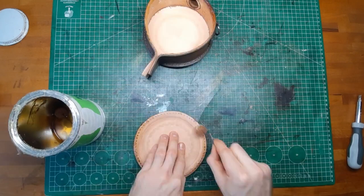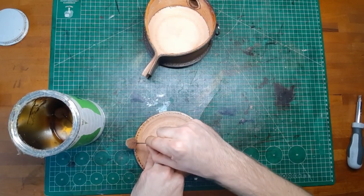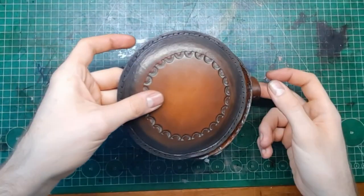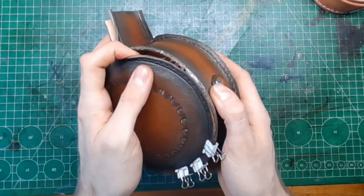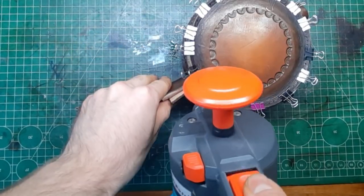And then the same procedure with the other side. It's a little bit more tricky since you can't place your hand on the inside, but it's easier since the rough shape is already established.